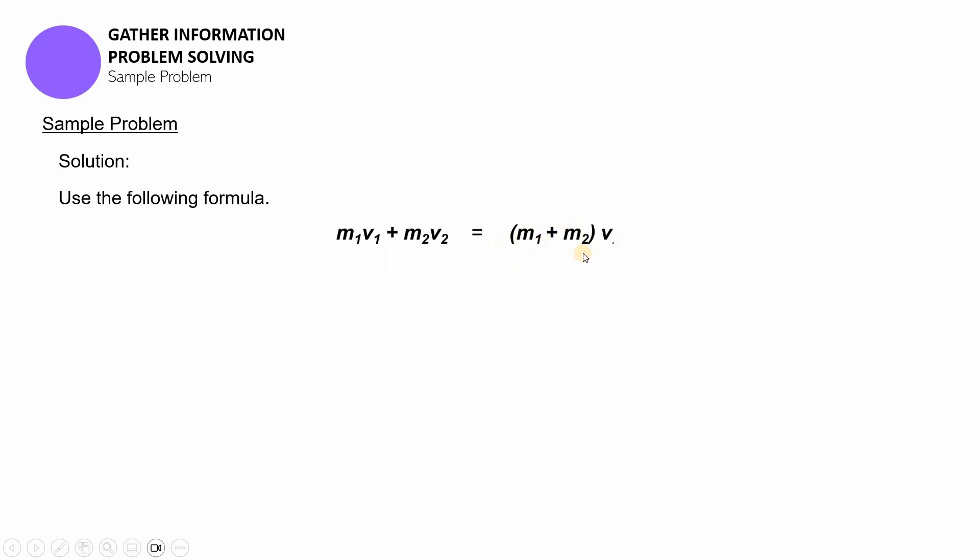Again, because they are still having separate momentums. Now after the collision they got stuck with each other, so that means their masses will be together again and they'll only have this one velocity over here. So they'll have only one velocity. Now I want you to substitute the givens, do it first.